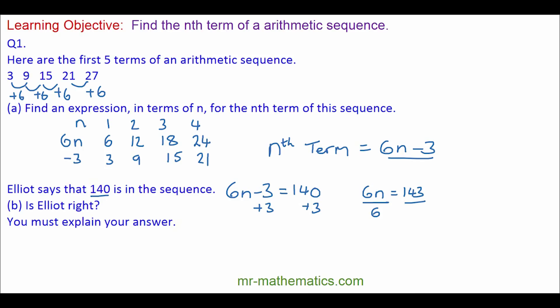Divide both sides by 6. So n will equal 28.83 recurring.